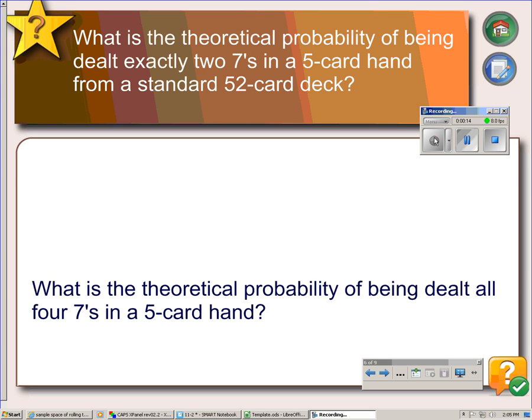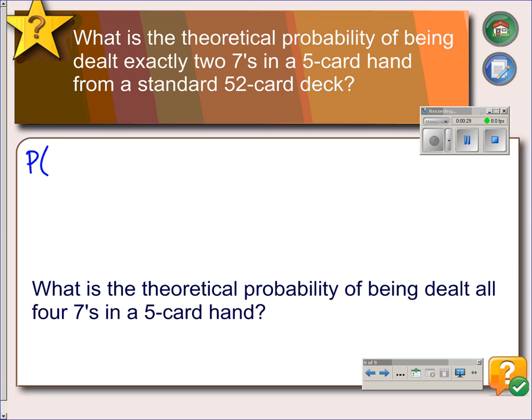In our first example, we're trying to find the theoretical probability of being dealt exactly two sevens in a five-card hand from a standard 52-card deck. So, we're looking for the probability of two sevens.